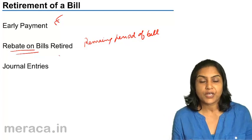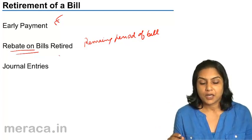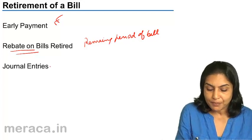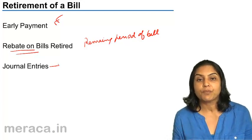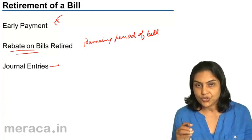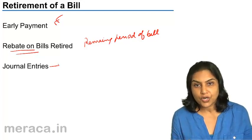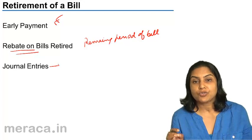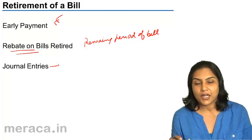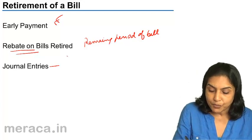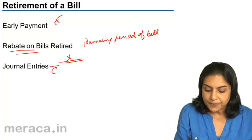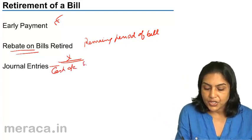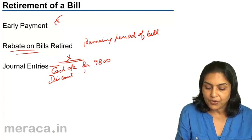What would be the journal entries? In the books of X, the drawer, the person who is to receive the payment — where there is a bill receivable — usually when the bill is honored the entry is: cash account debit to bills receivable. Now when cash is received, the entire amount is not received. Let us say out of 10,000, 200 rupees is the rebate.